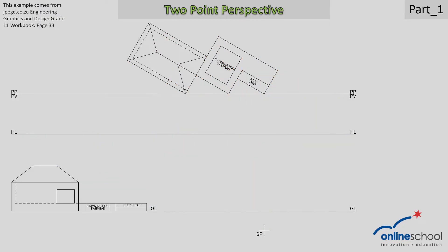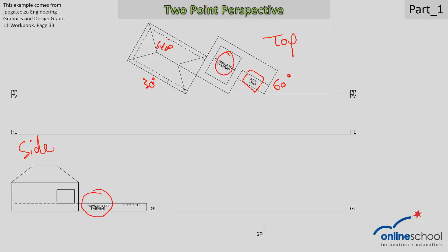Here we have been provided with the answer sheet. On the answer sheet printed for us is the top view and a side view. From here, we will notice that there is a 30-degree slant to the left and a 60-degree slant to the right. We have a swimming pool, we have a step, and then we have a hip roof. These are the challenges that we need to consider. When we look at our side view, we will see this swimming pool over here and the step over there. So let's start with the drawing.